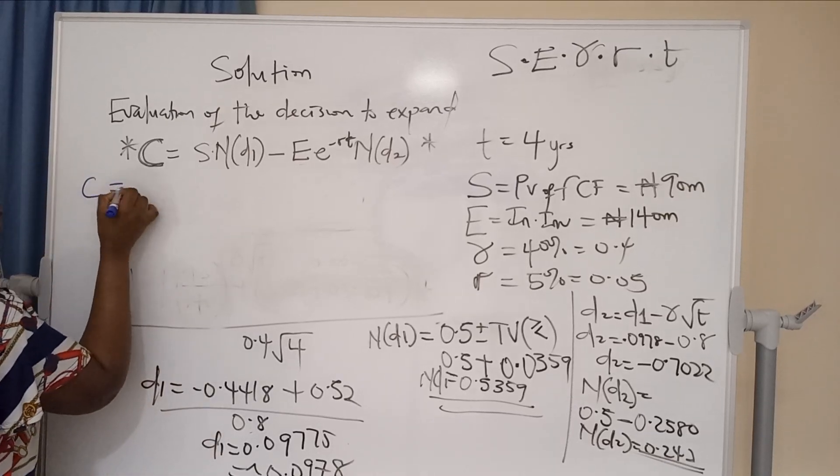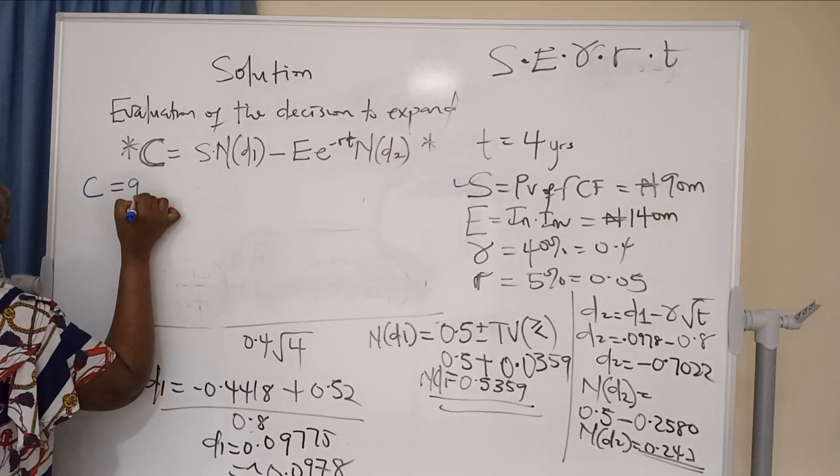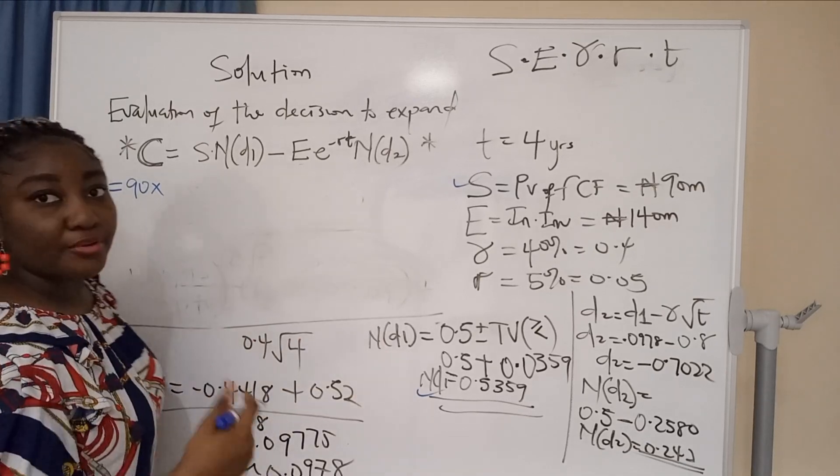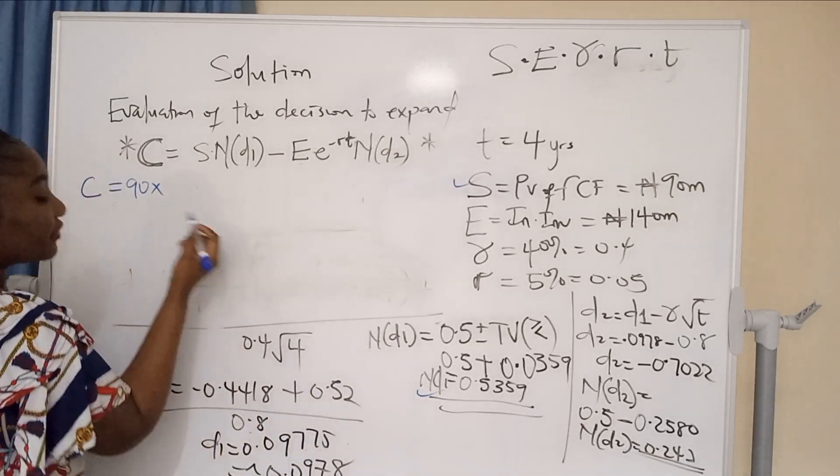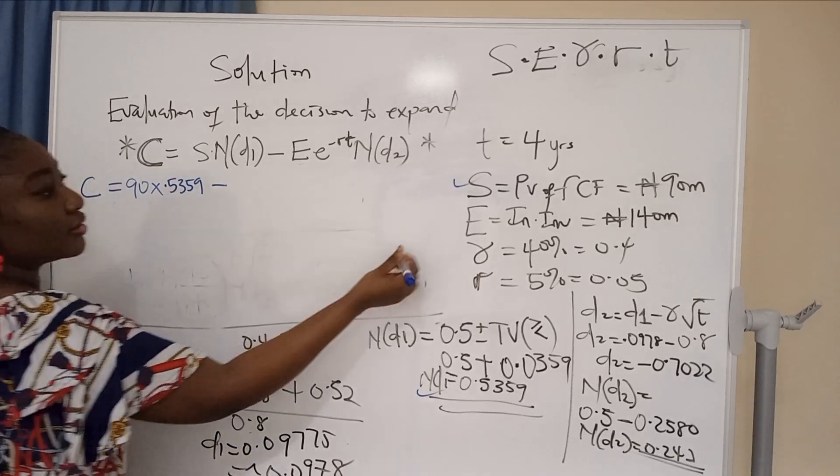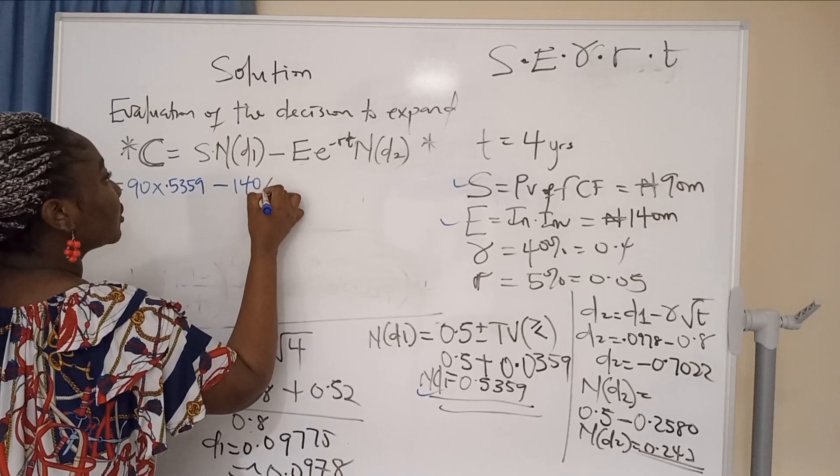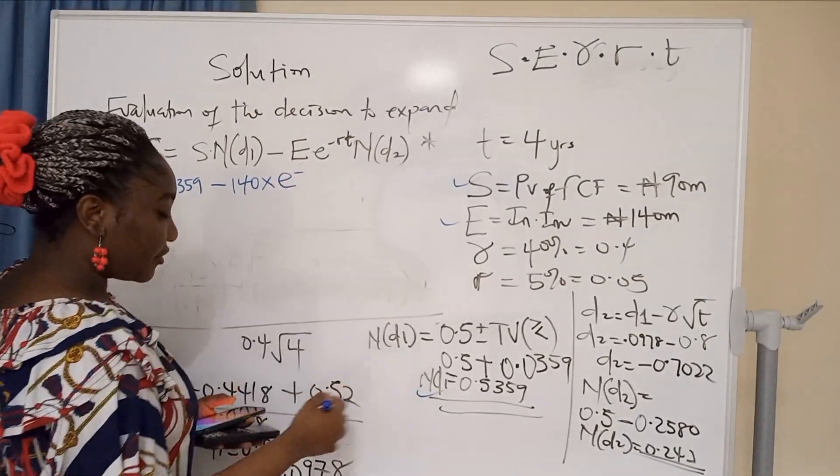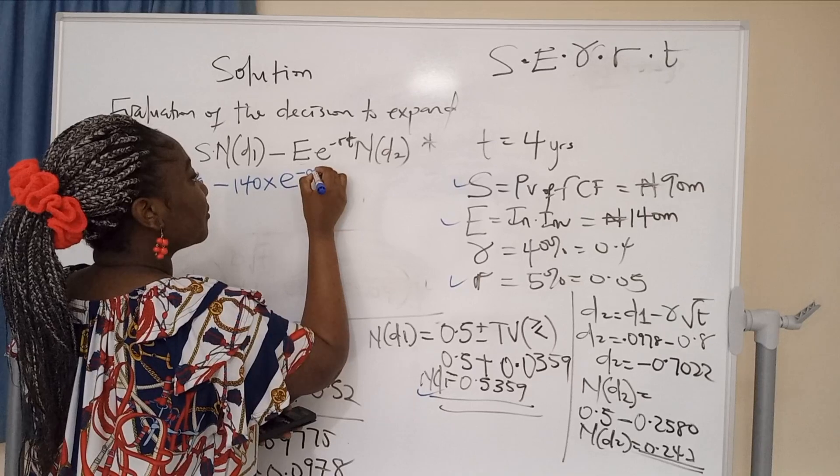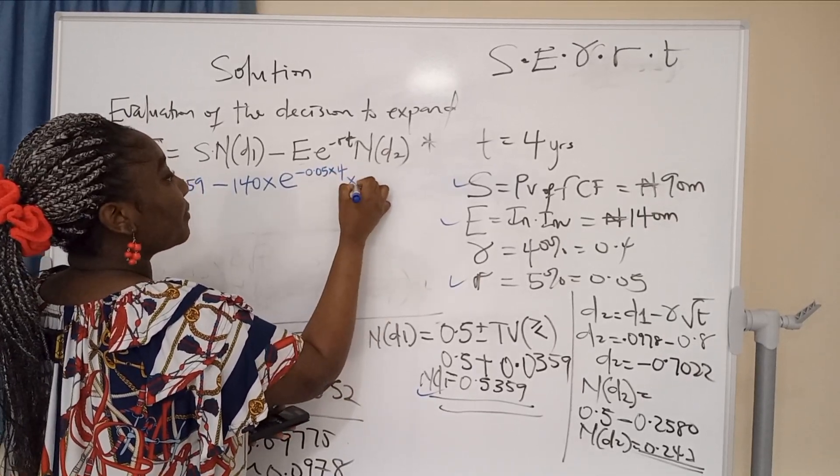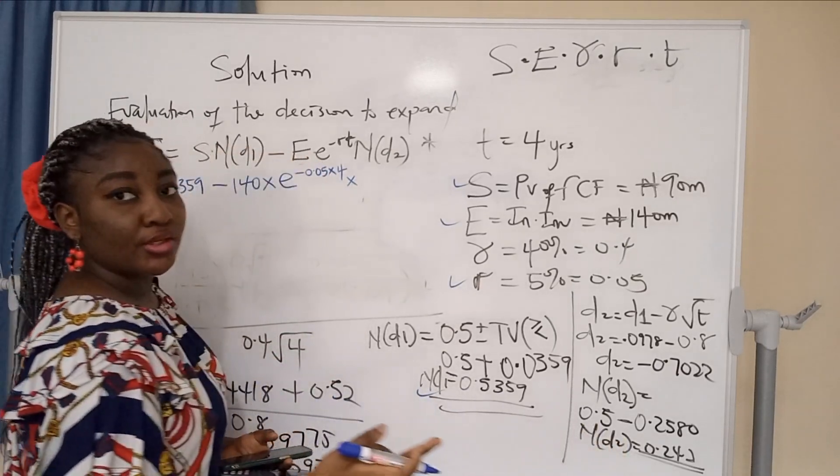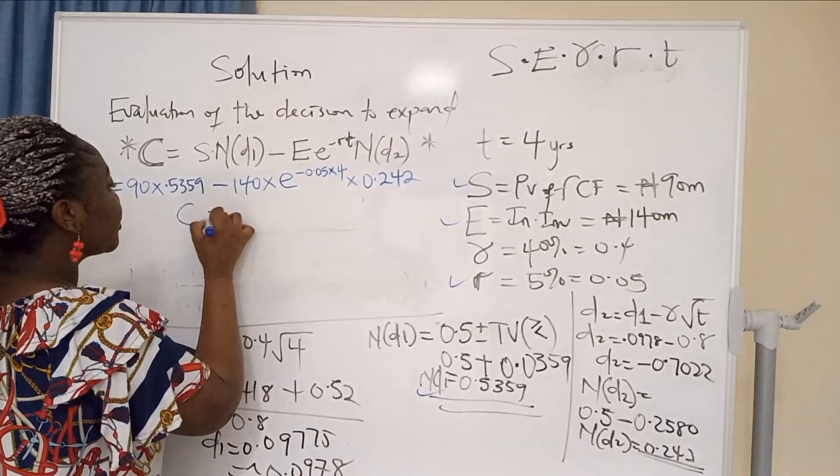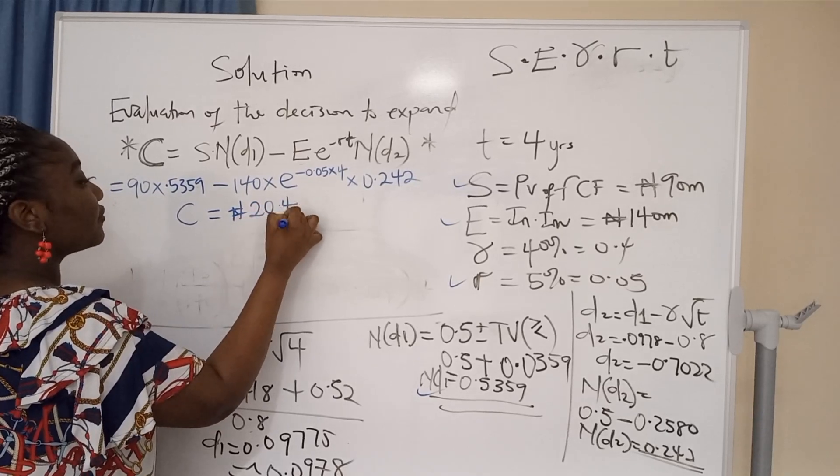Let's put our variables in this formula. C equals S - what's S? 90 million - multiply by N(d1), 0.5359. It means that the probability of deviation from these amounts is 0.5359. Minus E, 140 million, multiply by exponential - it's a calculator figure, a mathematical function - minus RT: 0.05 times 4 years, multiply by N(d2), 0.242. Put all of this in your calculator and you'll get your C to be 20.49 million.